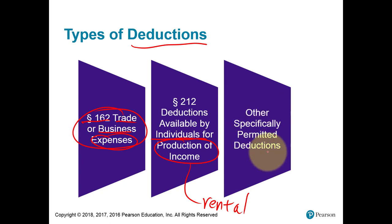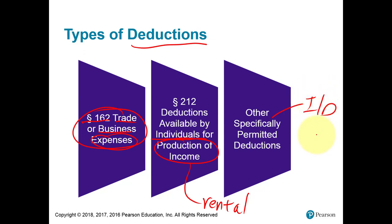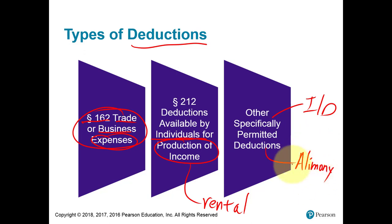There are other sections in the Internal Revenue Code allowing other specific deductions, like itemized deductions that we'll see in this chapter and more so in a future chapter. And then there's alimony — from the person receiving it as income in a previous chapter, but now if you're paying it you get to deduct it, and that's allowed specifically under an IRC section as a so-called for-AGI deduction.